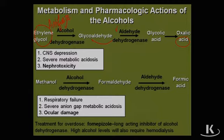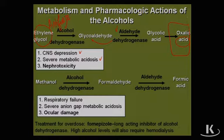Unfortunately, ethylene glycol is severely toxic, not only because of CNS depression and metabolic acidosis, but also because of the unique toxicity of oxalic acid. Oxalate makes very sharp crystals and tends to cause tremendous tubular damage in the kidney, resulting in ATN, or acute tubular necrosis.